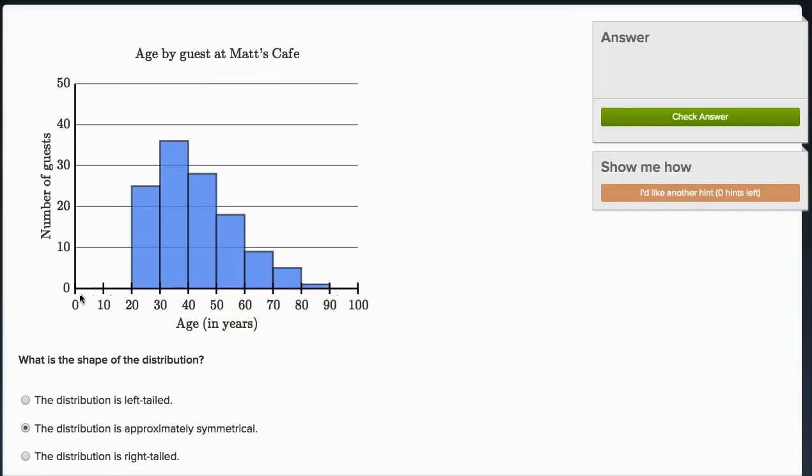And in each bucket, it tells us the number of guests that are in that age bucket. We don't have any guests that are under the age of 20. We have a reasonable number between 20 and 30, a lot of guests in that bucket between 30 and 40, a reasonable number between 40 and 50, and then as we get older, we have fewer and fewer guests.